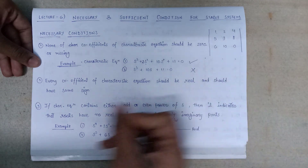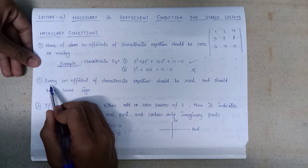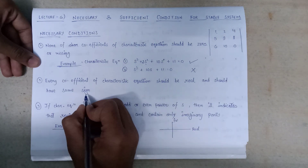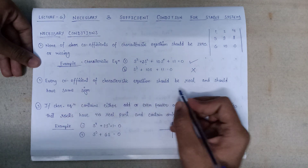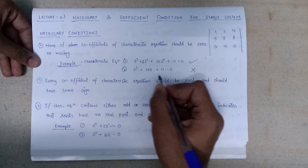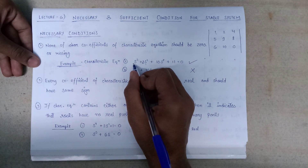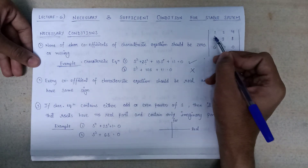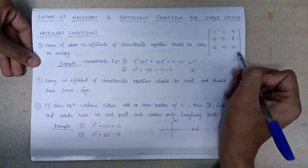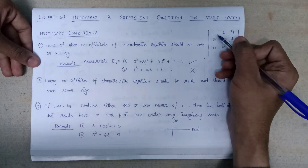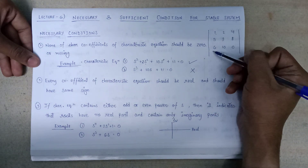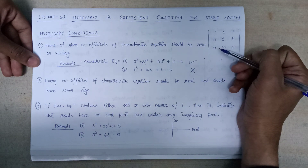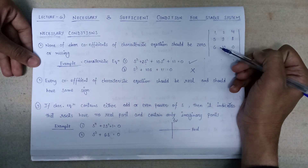Moving on to the second necessary condition: every coefficient of the characteristic equation should be real and should be of the same sign. The coefficients — such as 2, 10, and 11 — should all be real numbers. Additionally, the elements of the first column of the Routh Array should have the same sign for the system to be considered stable. This concept was discussed in earlier lectures.